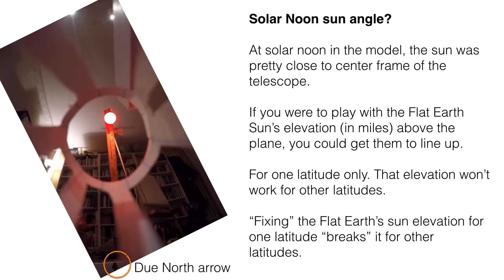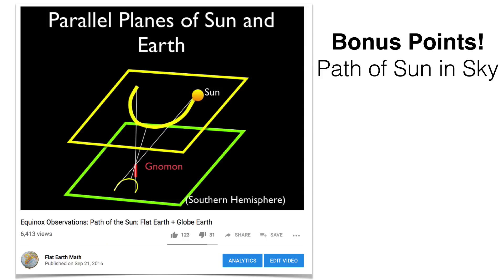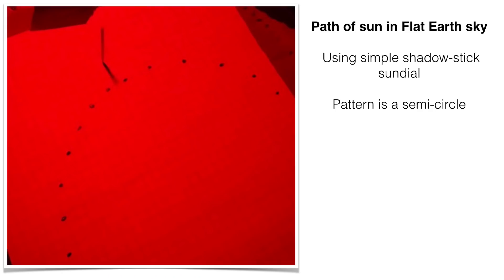Whatever elevation you pick will not work for other latitudes. If you fix it for one, you break it for the others. One of the things I really like is measuring shadows using a simple shadow-stick sundial and recording the sun's path in the sky. If the sun is traveling in a plane parallel to the plane of the Earth, the shadow stick sundial will faithfully record that pattern. In the southern hemisphere facing northward, we'll get a semicircular frowny-face shape. I marked the shadows by moving the sun — and it is semicircular, a frowny face as we face north.